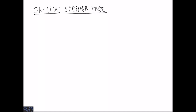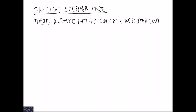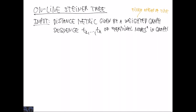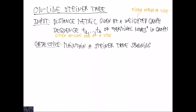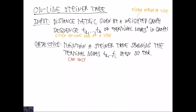In the final part of the lecture, we consider the online Steiner tree problem. The input has two parts. First, there is a distance metric given by a weighted graph, which is given ahead of time — we know this graph completely. Second, there is a sequence T1 through Tk of terminal vertices, given online one at a time. The objective, as in the standard Steiner tree problem, is to output a Steiner tree spanning the terminal vertices at minimum cost. The restriction is that we can only add edges, not remove any, and must maintain a valid Steiner tree at all times.